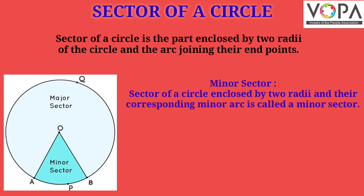There are two sectors. The first is the minor sector. A sector of a circle enclosed by the two radii and their corresponding minor arc is called a minor sector. Here, sector O-APB is a minor sector.